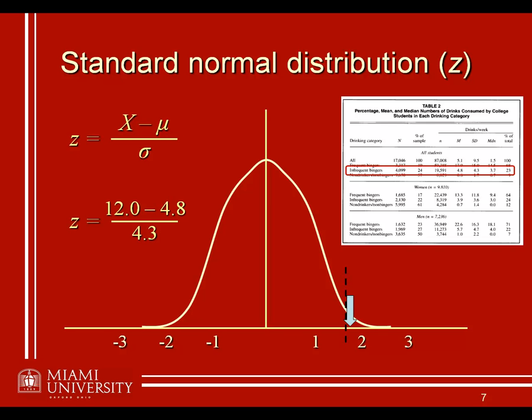What we see here is somebody who drinks 12 drinks in a given week, their z-score suggests that they are one of the most extreme infrequent binge drinkers. In particular, we would take this as sufficient evidence to say, it's unlikely this person is actually an infrequent binge drinker.